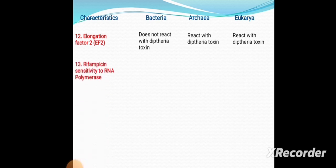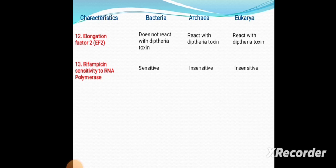Thirteenth is rifampicin sensitivity of RNA polymerase. In Bacteria, RNA polymerase is sensitive to rifampicin. In Archaea, RNA polymerase is insensitive to rifampicin, and in Eukaryotes it is also insensitive to rifampicin.